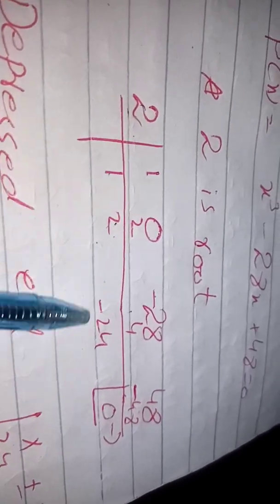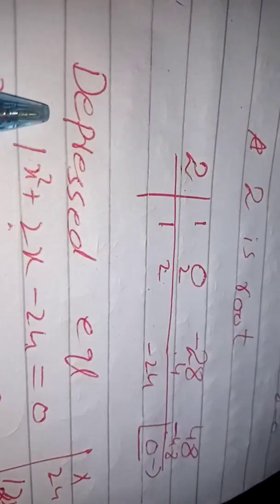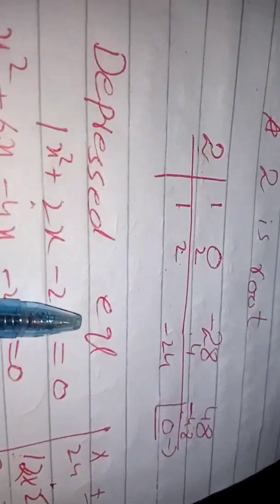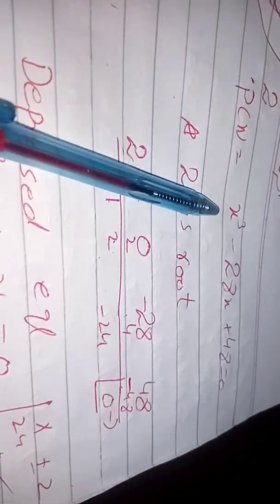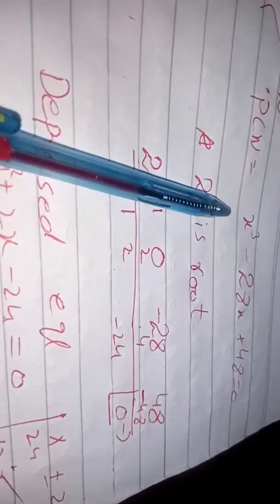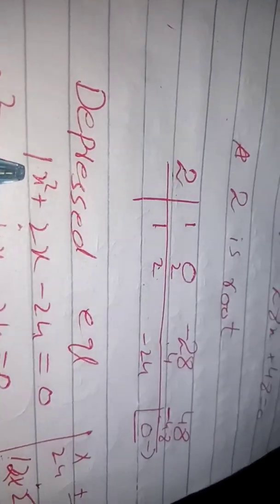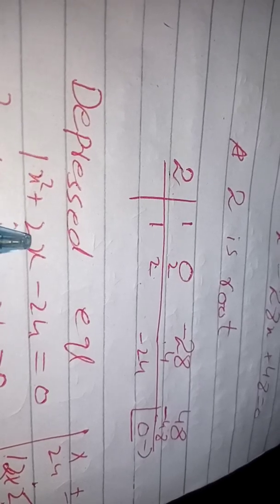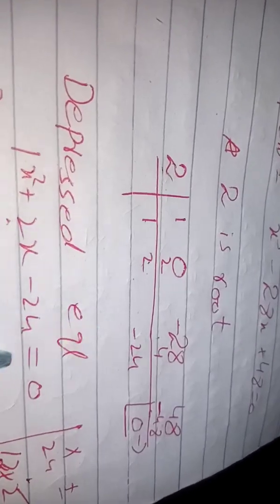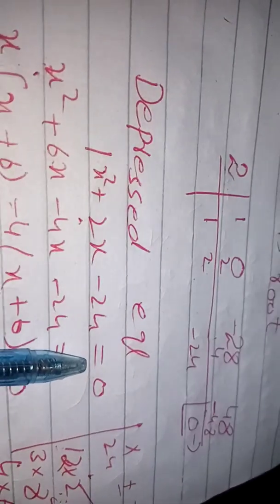Now for this term we write the depressed equation. Since the original equation was a cubic, the depressed equation reduces it by one degree to a quadratic. We write the depressed equation as x² plus 2x minus 24 equals to 0.